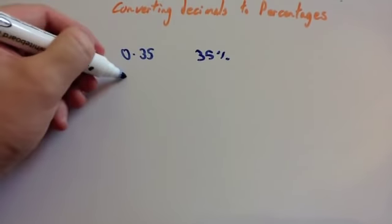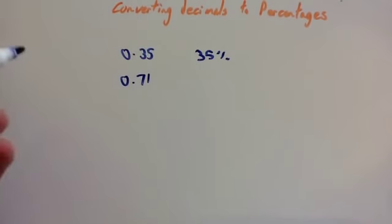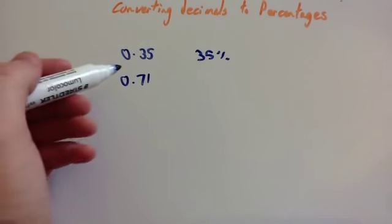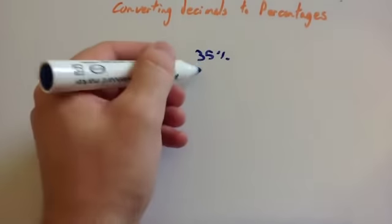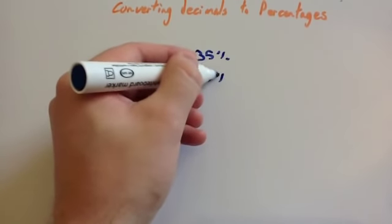Let's look at number one, 0.71. Well, if you want to change that to a percentage, you'd multiply it by 100. So you move the decimal place twice, 1, 2, and get 71%.